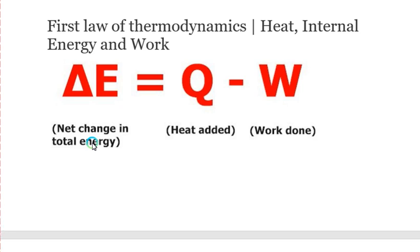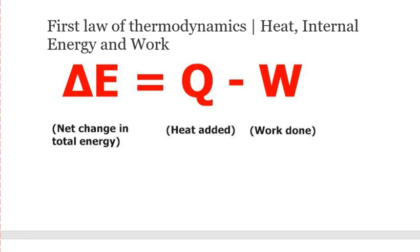The first law of thermodynamics states that the net change in the total energy of the system is equal to the heat added to the system minus the work done by the system. When the system gains heat, the net total change will increase. But if the work performed increases, then the net change in total energy is also decreasing. So it's just a simple formula that we can understand through this specific formula.